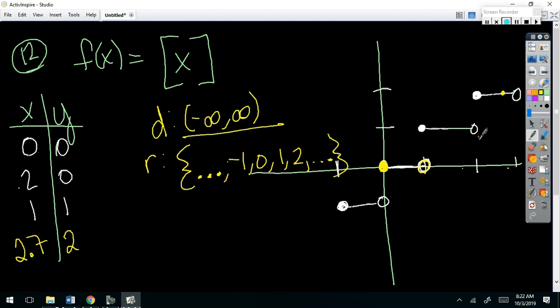Everybody okay on greatest integer step function? One more. This is probably, it's number 12 in your packet, though. This is called the logistic function. And we will reference this for several things. So, this is kind of looks like a cube root graph. A cubic on its side is what it kind of looks like. So, we're going to pick some points.